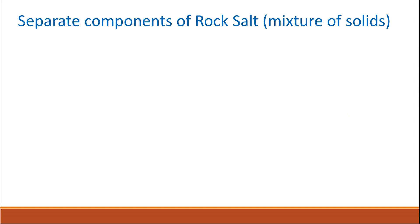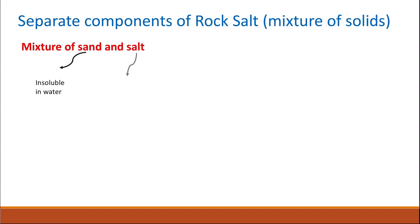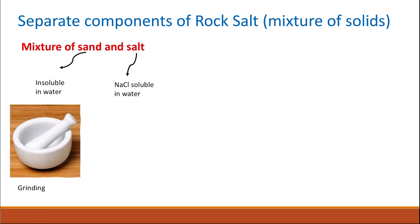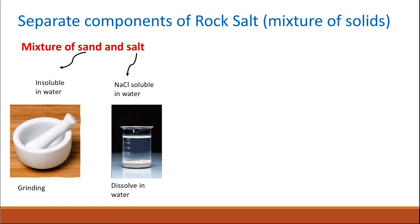If you have a mixture of solids and you want to separate them, you can separate them based on the nature of their solubility. An example is separating components of rock salt. Rock salt is a mixture of sand and salt — salt is sodium chloride — and these are two solids. The sand is insoluble in water while the salt, which is sodium chloride, is soluble in water. The first step is to grind them together, making sure they have a small particle size, and then dissolve the mixture in water and heat it.